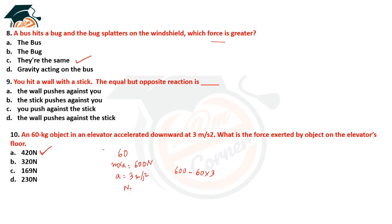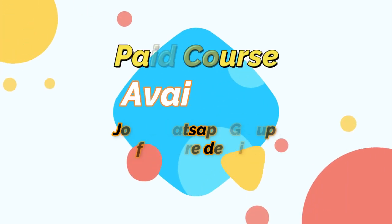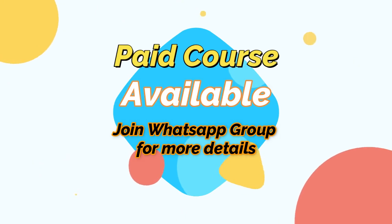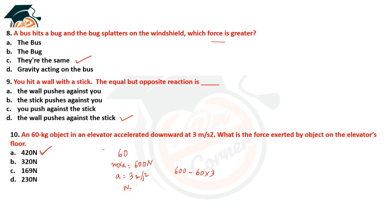If you hit a wall with a stick, the equal and opposite reaction is the wall pushing back — Newton's third law. Next problem: a 60 kg object in an elevator accelerating downward at 3 m/s². Force exerted = mg − ma = (60 × 10) − (60 × 3) = 600 − 180 = 420 Newton.